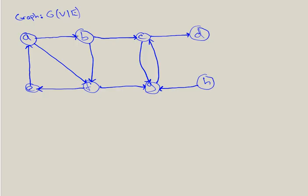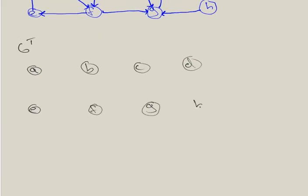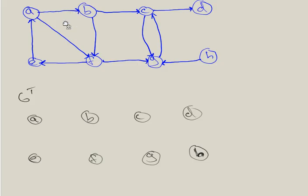All that means is just reversing the edges. Let me make the transpose of this graph. Transpose means we reverse every edge in the original graph, and you have to be very careful when you do this — you can't make any mistakes, because one mistake could mess up your answer. I encourage you all to double-check your work.